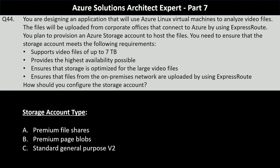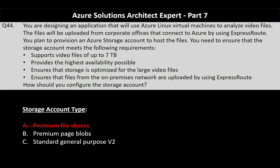The first part of the question focuses on choosing the storage account type. Your options are premium file shares, premium page blobs, and standard general purpose version 2. Whenever you want to store video files, always look for block blobs. The two storage types that support block blobs are premium page blobs and standard general purpose v2. However, the question specifically focuses on providing the highest availability possible, so you will have to go with general purpose v2 storage, as premium page blobs do not support GRS.